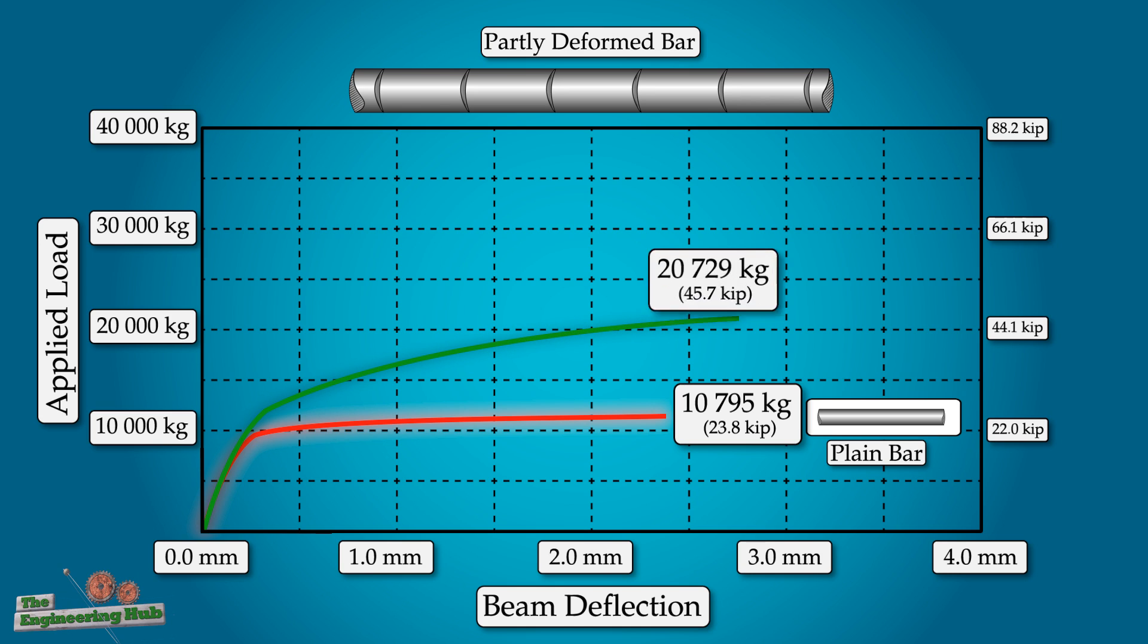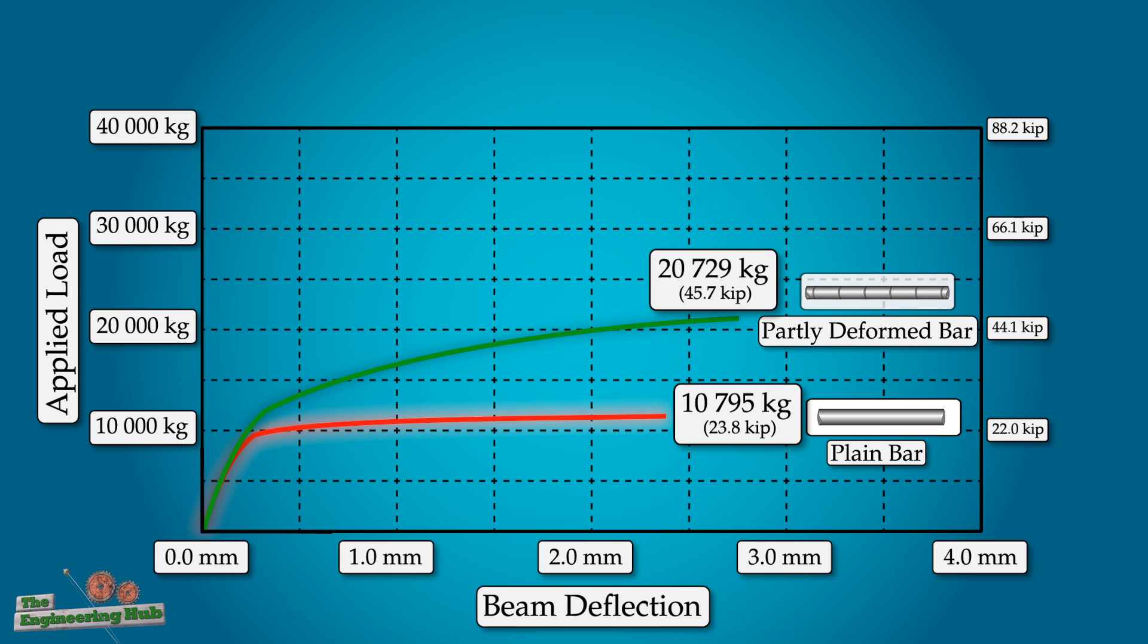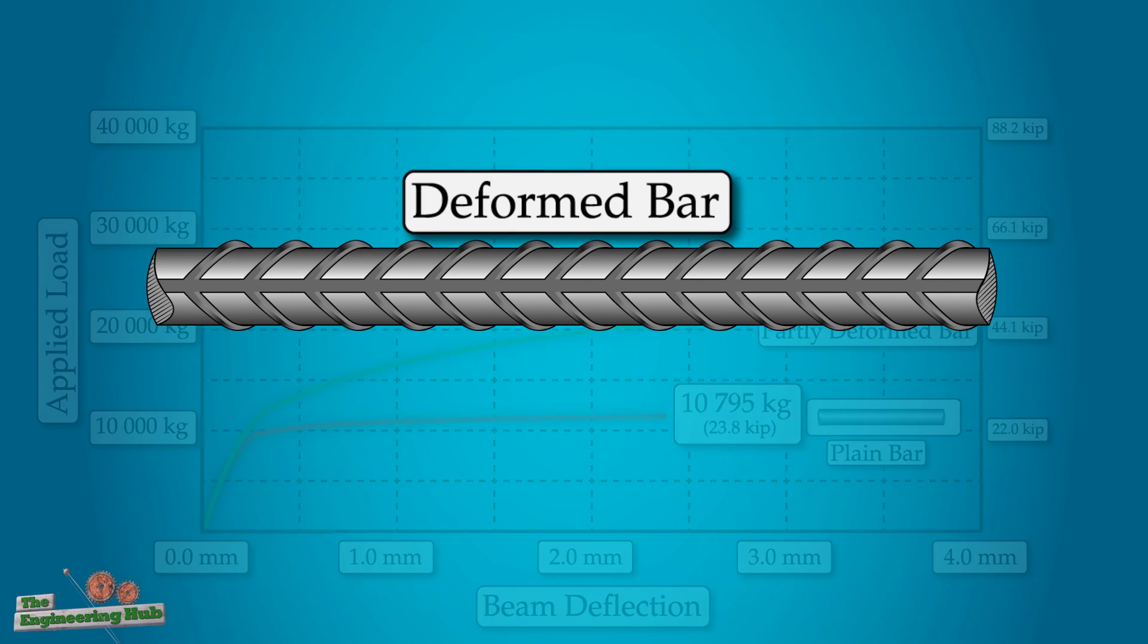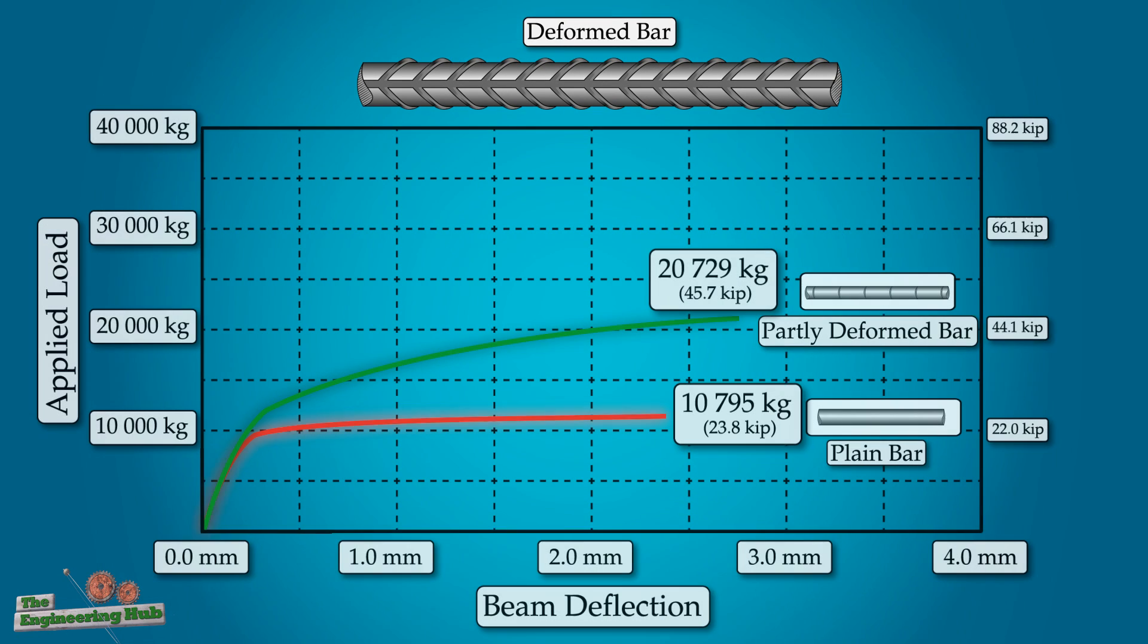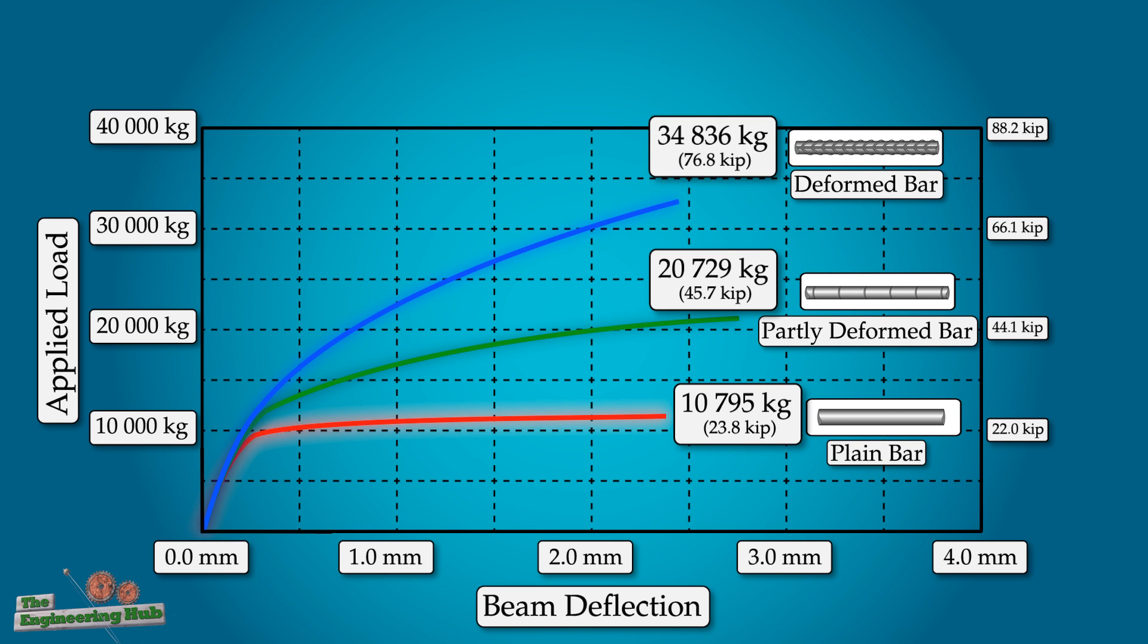Lastly, a beam with fully deformed rebar was tested. The rebar of this beam are similar to the rebar commonly used in construction today, with the deformations only 1 centimeter apart. The capacity of this beam almost tripled the beam with plane reinforcement, reaching 34.8 tons before failure.